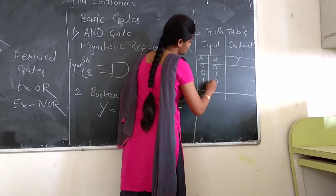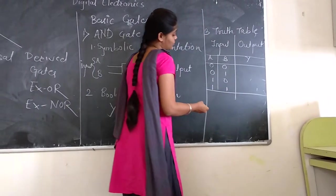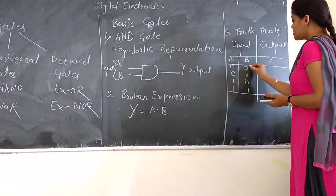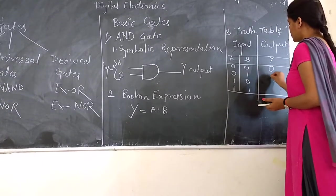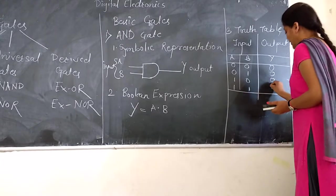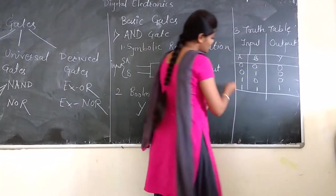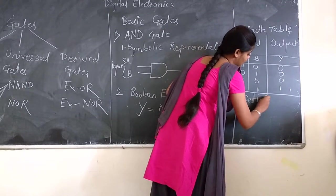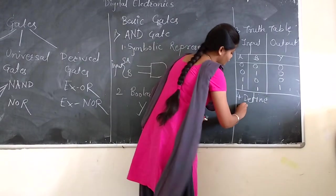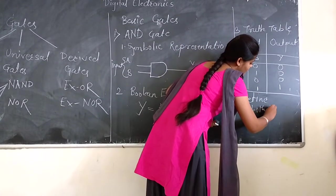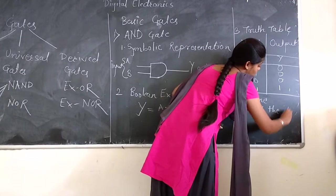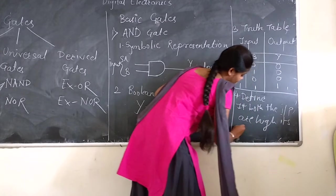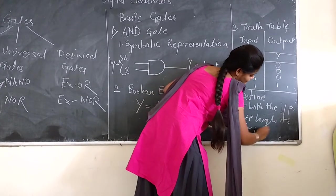We have four different combinations, from zero-zero to one-one. So you can apply the expression on this table. From this table we can define AND gate as: if both the inputs are high, its output is high.